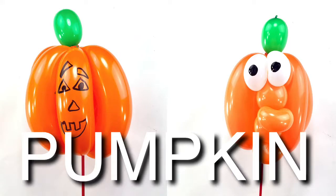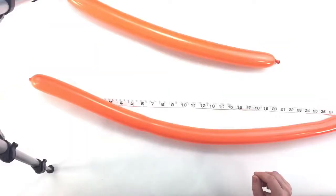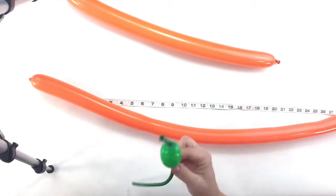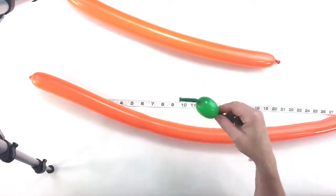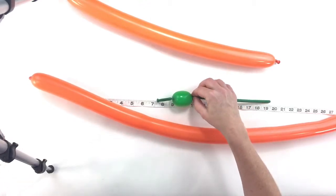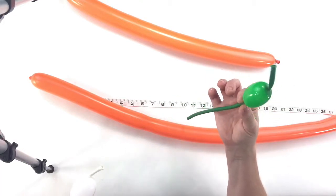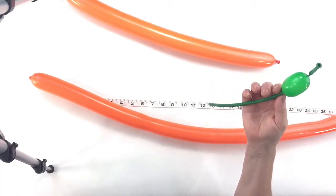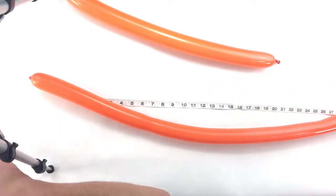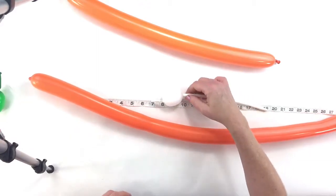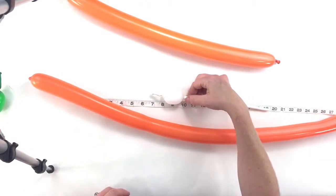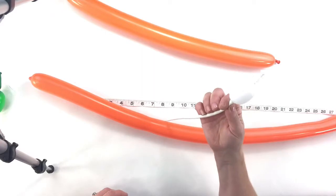Okay, let's make a jack-o-lantern or pumpkin. For this we need two orange 260s, a little stem piece like about an inch and a half bubble of spring green for the stem, and an inch and a half white bubble for the eyes, a piece of a 260.